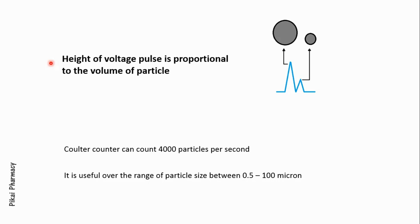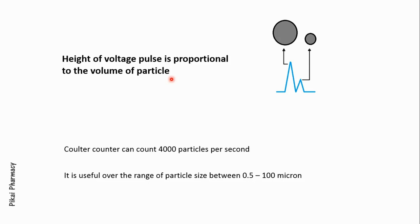In the graphical representation of the voltage pulse, the height of a pulse is proportional to the volume of the particle that enters through the orifice. That means the higher the height of the pulse, the larger is the size of the particle. Each pulse represents a single particle. If your graph contains 30 pulses, then 30 particles were pumped through that orifice.